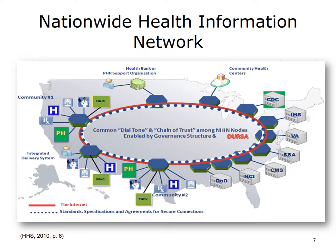Outside the rings, starting in the upper left corner and going counterclockwise, are the labels: Community No. 1, Integrated Delivery System; Community No. 2, Various Federal Agencies; Community Health Centers; and Health Bank, or Personal Health Record (PHR), Support Organization. The reason behind the development of the NWHIN is to provide a secure, nationwide, interoperable health information infrastructure that will connect providers, consumers, and others involved in supporting health and health care. This critical part of the National Health IT agenda will enable health information to follow the consumer, be available for clinical decision-making, and support appropriate use of health care information beyond direct patient care so as to improve health.